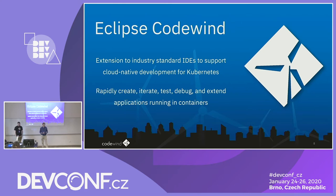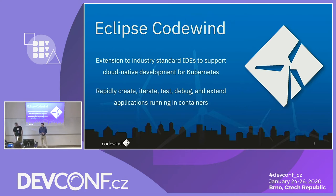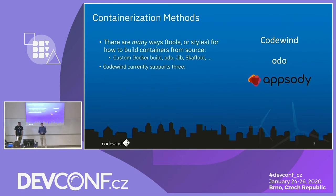Codewind is basically a native development environment for Kubernetes, though its vision is slightly broader. We also support local type scenarios, allowing you to run and test on your local system still in a containerized environment, and then move to Kubernetes as well. It provides ways to rapidly create and develop your application, do debugging — anything you'd expect in a typical development environment. Any questions so far? Are people at the back hearing okay?